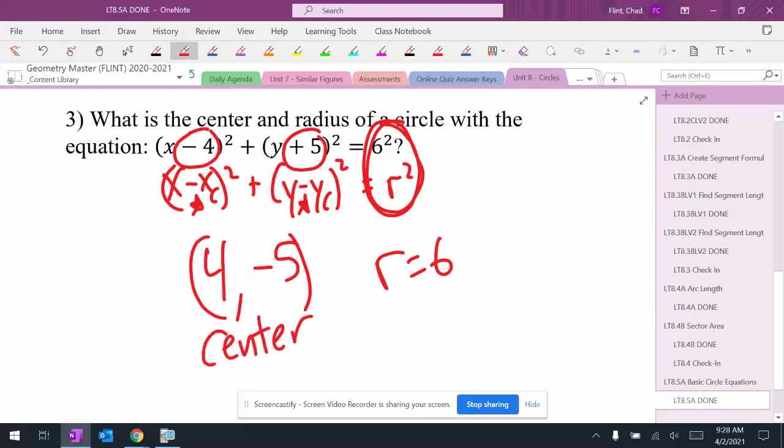And then the radius is 6. My kind of general rule is here, remember that this is radius squared. So you would have to take the square root to get the radius. I think if it's written like that, it's okay.